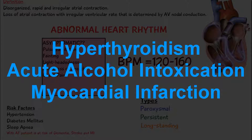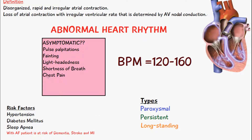Now, the symptoms of atrial fibrillation: in some cases it can actually be asymptomatic, so the patient isn't aware they're having an episode. Another symptom is pulse palpitations, where the pulse is very irregular. The patient may also experience fainting and lightheadedness, as well as shortness of breath.